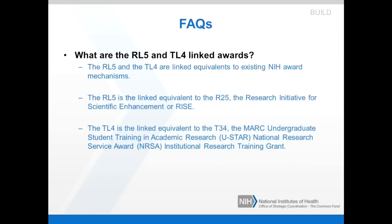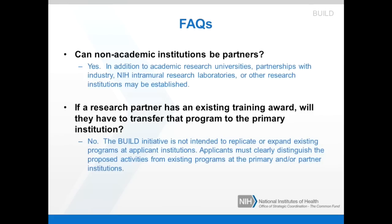What are the RL5 and TL4 linked awards? The RL5 and TL4 are linked equivalents to existing NIH award mechanisms. The RL5 is the linked equivalent to the R25, the Research Initiative for Scientific Enhancement or RISE, and the TL4 is the linked equivalent to the National Research Service Award (NRSA) institutional research training grant. Can non-academic institutions be partners? Yes. In addition to academic research universities, partnerships with industry, NIH intramural research laboratories, or other research institutions may be established.